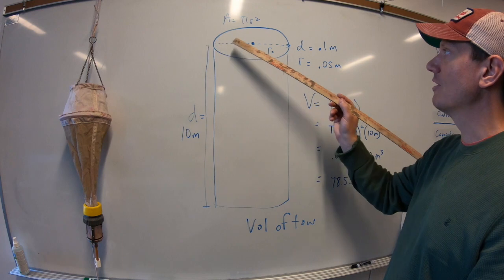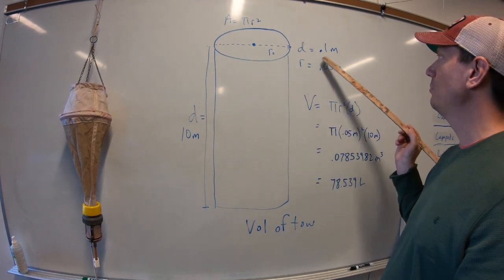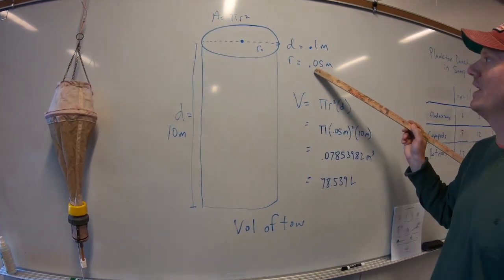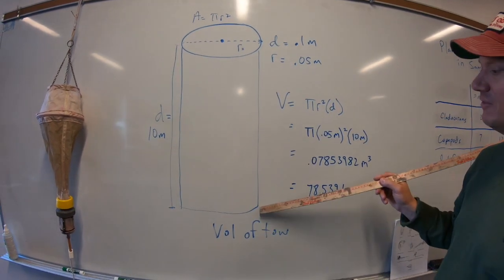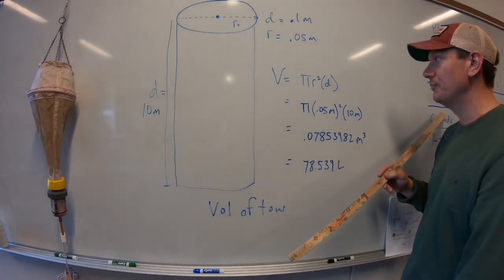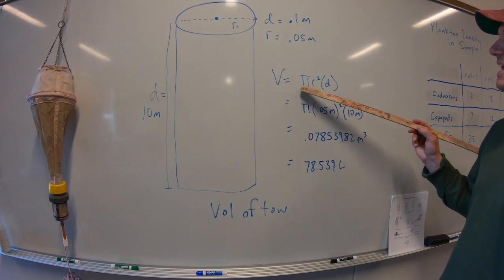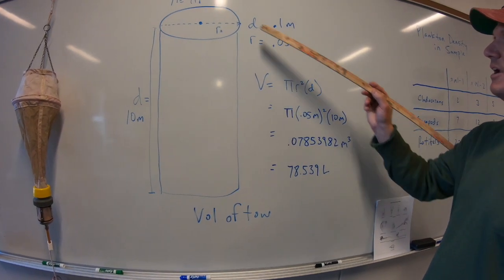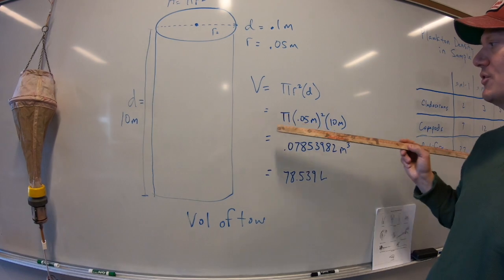So the diameter of the opening is 0.1 making the radius 0.05. So what we're doing essentially is figuring out the volume of the cylinder using the formula v equals pi r squared. Remember, a equals pi r squared is the area of the aperture.